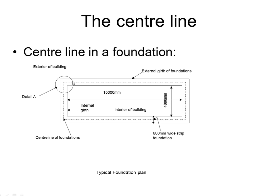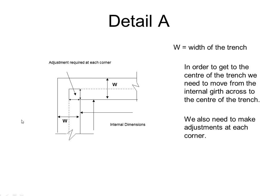We would also like to pay attention to what we do with Detail A here on the corner adjustment. W is the width of the trench — in this particular instance, 600 mm for our foundation. In order to get the centre of the trench, we need to move from the internal girth across to the centre. We also need to make adjustments at each corner.